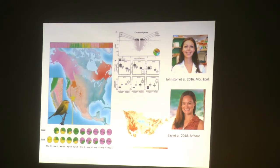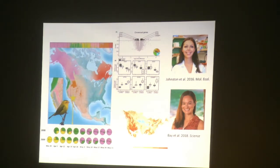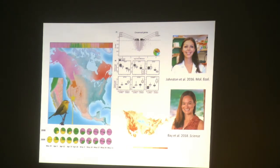Another study that came out of this effort was Rachel Johnson's work — a graduate student in EEB — who looked at what happens when birds are getting ready to migrate. There are huge physiological changes that go on. She looked at which genes are expressed differentially during that period and was able to identify a number of genes that seem to be very critical in migration.